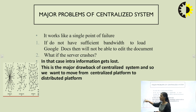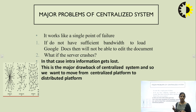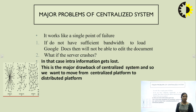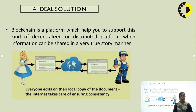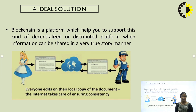In the centralized system, many users are connected to one central server. In the decentralized system, multiple users are connected to different servers. Blockchain provides a decentralized, distributed platform in which information can be shared in a true manner. For example, if Alice wants to change a document, she has a local copy of that document.